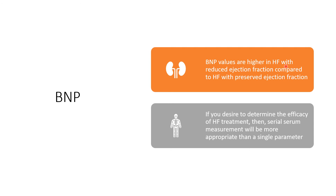BNP values are higher in heart failure with reduced ejection fraction compared to heart failure with preserved ejection fraction. So if your left ventricular ejection fraction is low — something like 35% to 45% — expect the value of BNP to be very high. But if it is heart failure with preserved ejection fraction, the value might not be so high when you compare the two conditions.